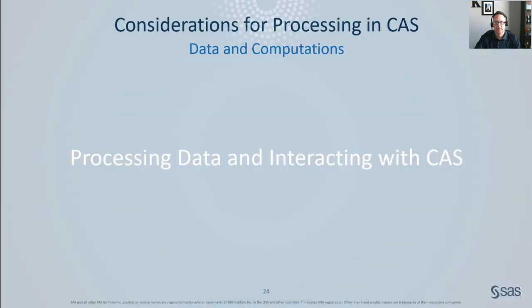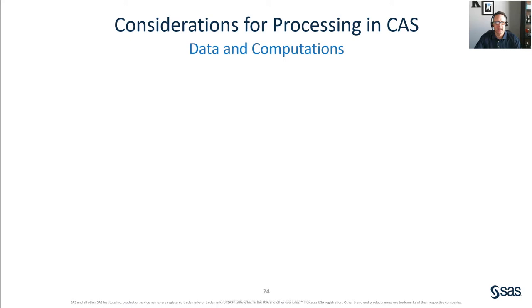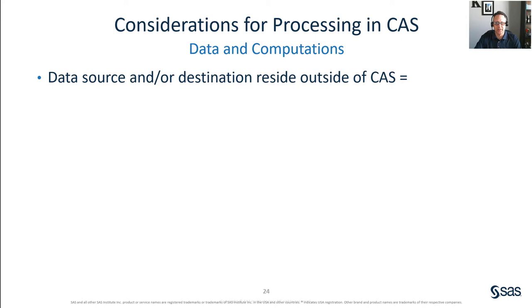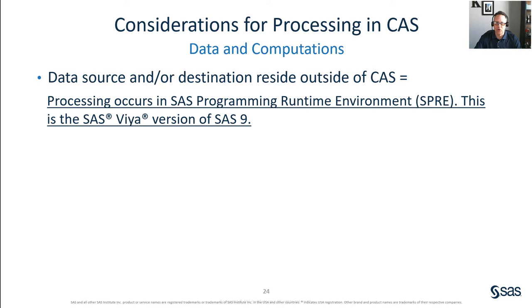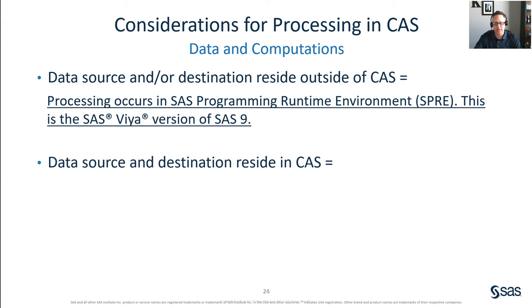Some considerations for processing in CAS: when your data source and/or destination table reside outside of CAS, processing will automatically occur in SPRE, the SAS Programming Runtime Environment — this is the SAS Viya version of SAS 9. When your data source and destination reside in CAS, processing will occur inside of CAS. It's very important to remember that in order to process in CAS, both your source data and your target data must reside inside of CAS.